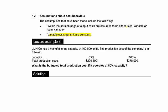We're also assuming that costs are either fixed, variable or semi-variable within a range. In plain English, within the range we've been given the fixed cost remains fixed and the variable cost per unit remains constant.